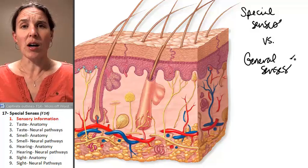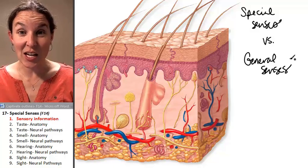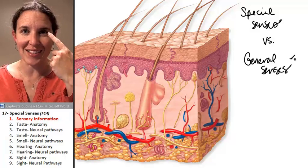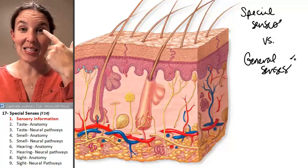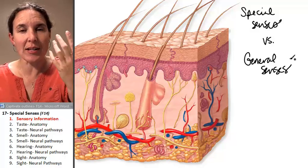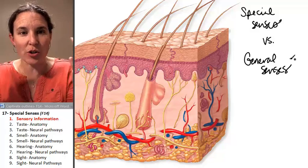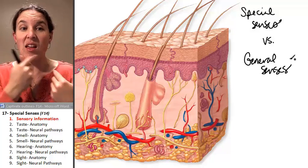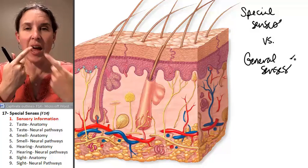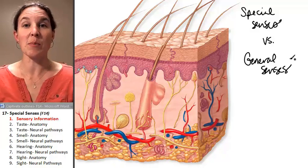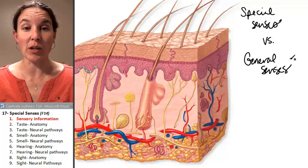However, you cannot detect light anywhere except for your eyes. That's a special sensory organ — it's an entire structure. We'll learn the anatomy of the eye, the ear, the tongue, and the nose. These are the special senses that we're going to look at.